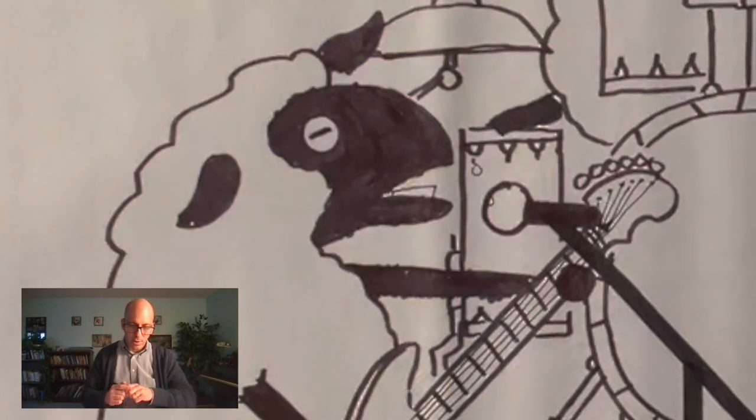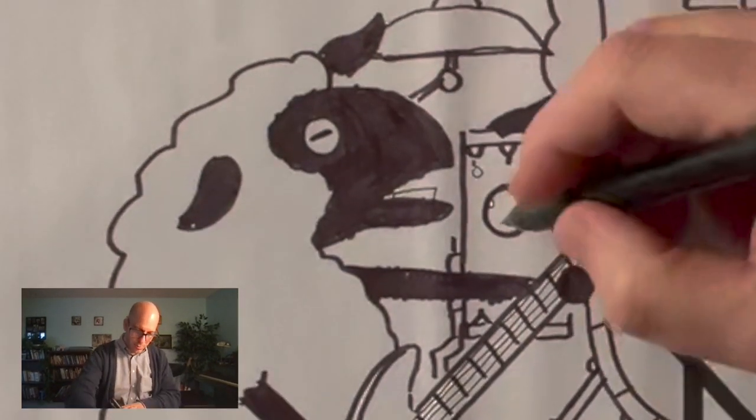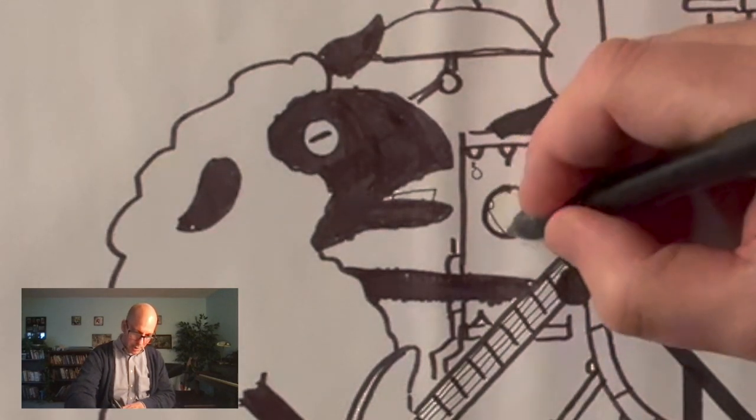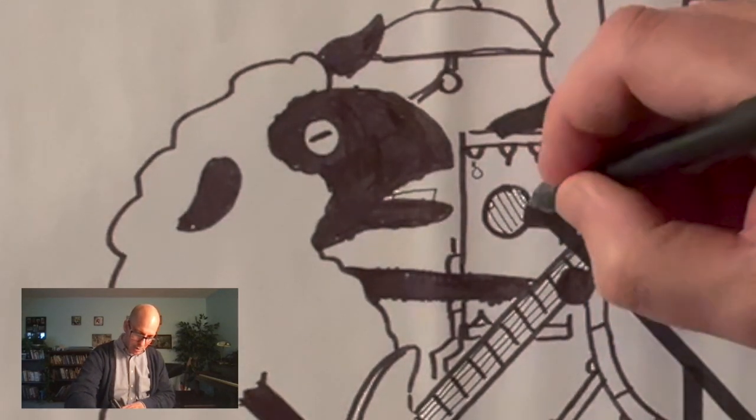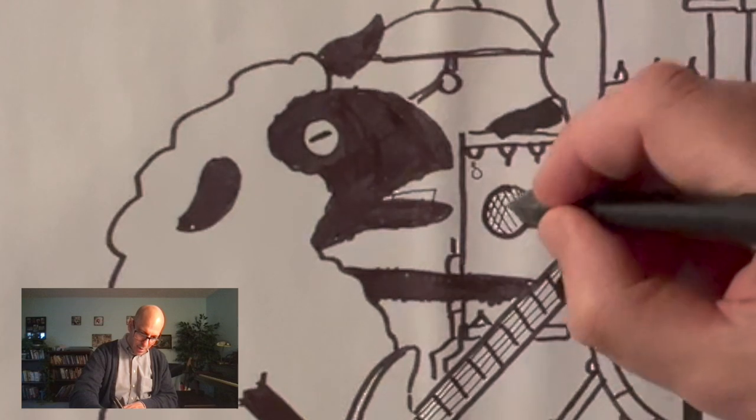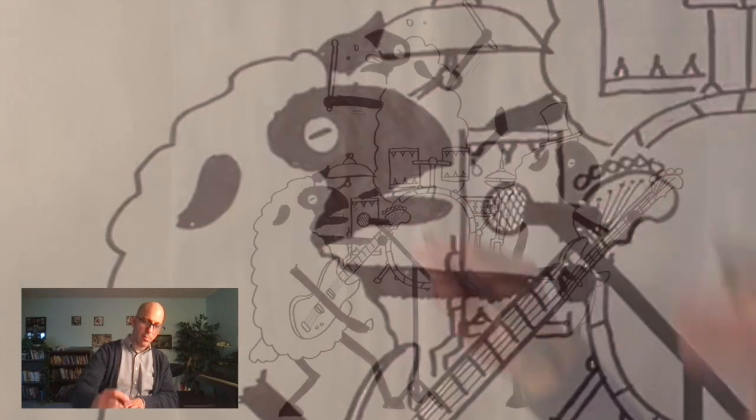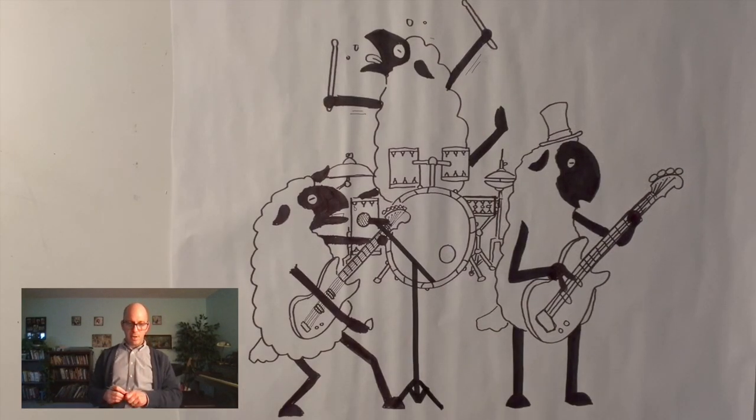Now, before I leave this real quick, a nice way to make kind of the boom, I'm sorry, the mic is to do this stripey texture. Mics have like a wire mesh over top of the parts that actually grab the sound. So now I've got him singing into a mic.